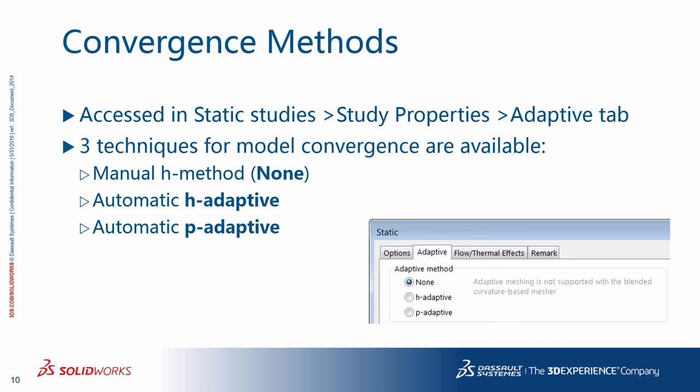Within SOLIDWORKS Simulation for Static Studies, under Study Properties Adaptive tab, you have three options regarding convergence. Choosing none does not activate any adaptive methods, and you can use the H method manually. The other two options are Automatic H Adaptive and Automatic P Adaptive. Let's discuss each of these three methods.